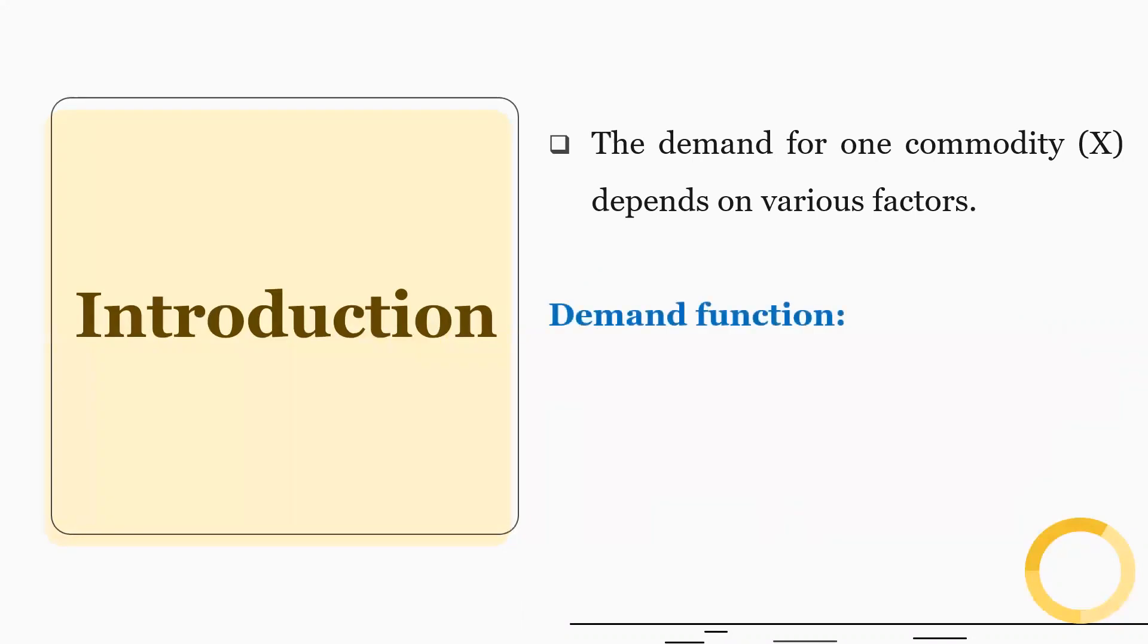Let me begin with the introduction. The demand for one commodity depends on various factors. So the demand function for commodity X can be written as quantity of X is a function of price of X, income of the consumer, price of Y and some other factors.